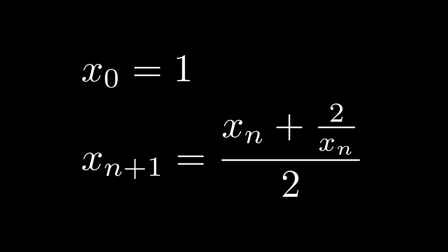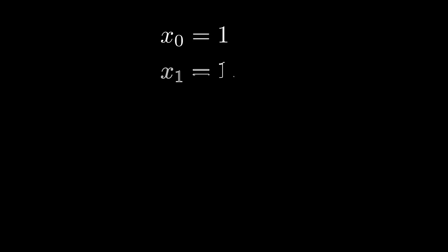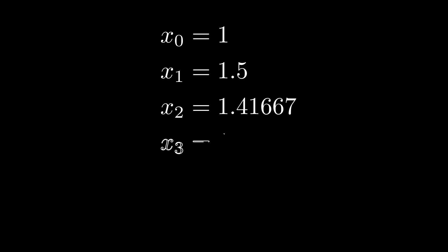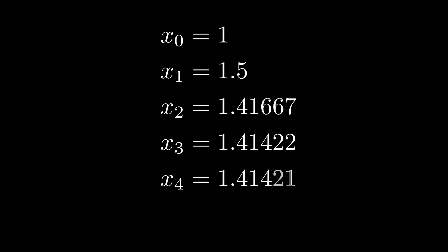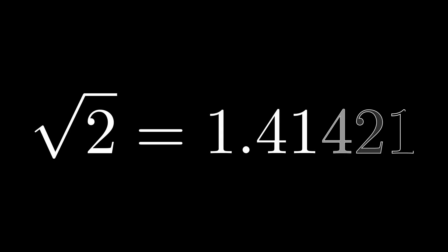Starting with an initial guess of x_0 = 1, each subsequent term x_(n+1) is obtained by taking the average of x_n and 2/x_n. As the sequence progresses, the terms get closer and closer to the actual value of the square root of two. Here is a table showing the first few terms: x_0 = 1, x_1 = 1.5, x_2 ≈ 1.41667, x_3 ≈ 1.41422, x_4 ≈ 1.41421, x_5 ≈ 1.41421. The more iterations we perform, the closer the approximation gets to the true value.